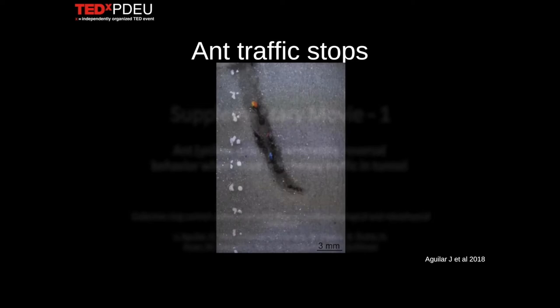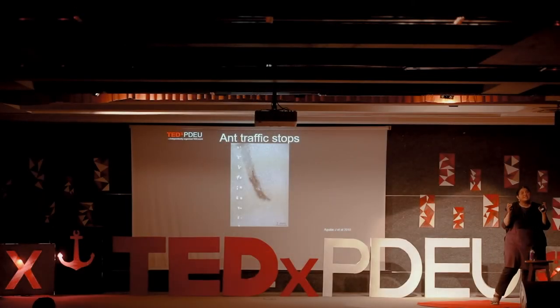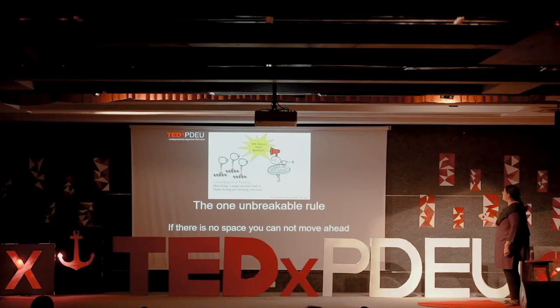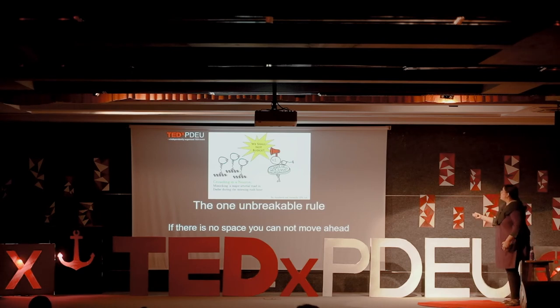Surprisingly, this kind of stopping of cargo is not restricted to just what happens in neurons or in human drivers. Here is an example of an ant trying to get past an obstacle — there is a forward ant, ants pile up behind it, and they all want to get past but cannot do so. There is some local squeezing and movement, but it is really not able to move forward significantly. From these cases, we say there is possibly one unbreakable rule: if there is no space in front of you, you cannot move ahead.